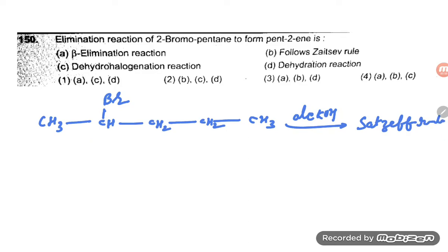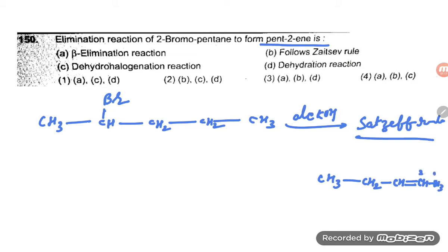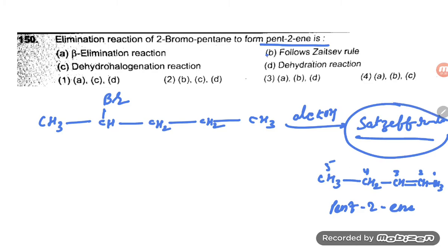Following the Zaitsev rule, the product it gives is pent-2-ene. So: CH3 — CH2 — CH=CH — CH3. One, two, three, four, five. So this is pent-2-ene. This is pent-2-ene.